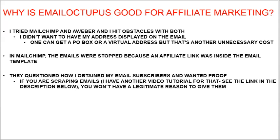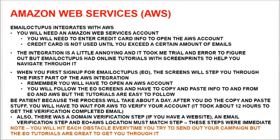When you're first starting out, you want to keep expenses as low as possible. Another obstacle was that when I tried to send emails through MailChimp, they weren't allowed to go through because the email had an affiliate link — so how am I going to do affiliate marketing with MailChimp? And lastly, there's a section where you have to explain how you got your email list, and if you're doing email scraping you won't be able to prove that through landing pages or website links. All of these were obstacles I did not face with Email Octopus.